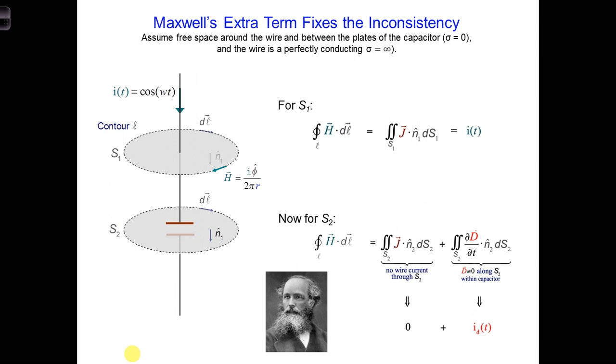And this is where James Clerk Maxwell comes in, as shown here. He dealt with this inconsistency by adding a new term, the displacement current term. He added it in 1861.